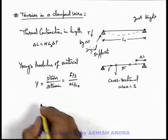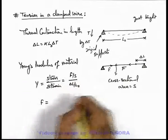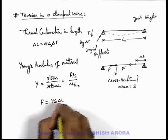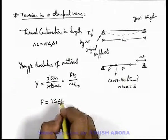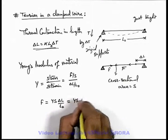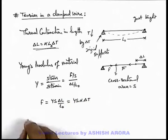So in this situation, this tension in wire can be written as YS delta L by L naught. And delta L by L naught from here we can write as alpha delta T. So it can be written as YS alpha delta T.